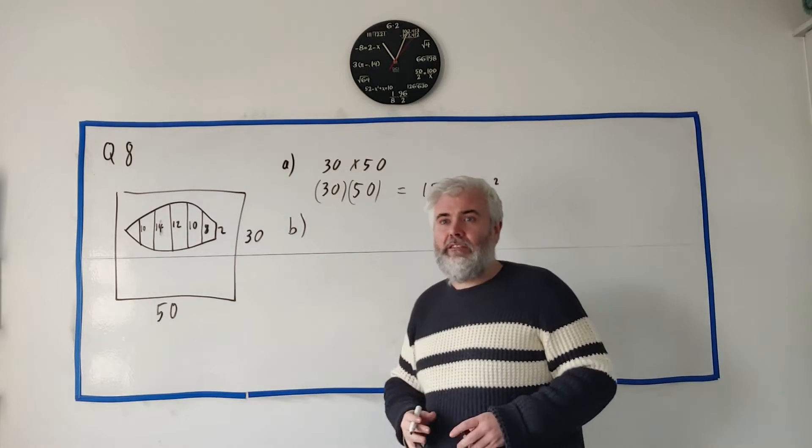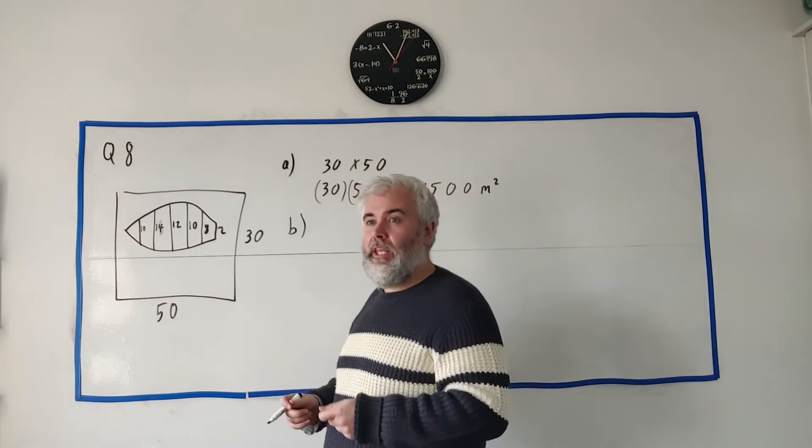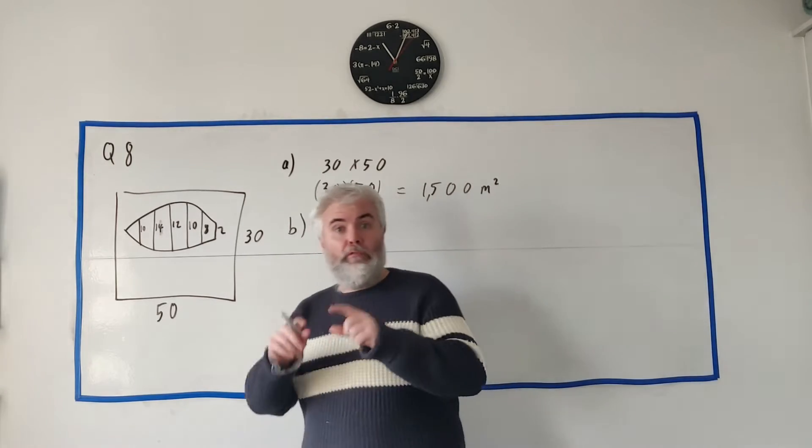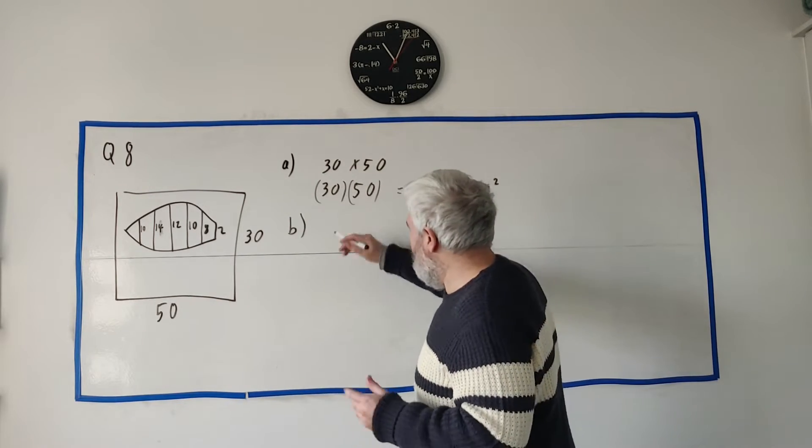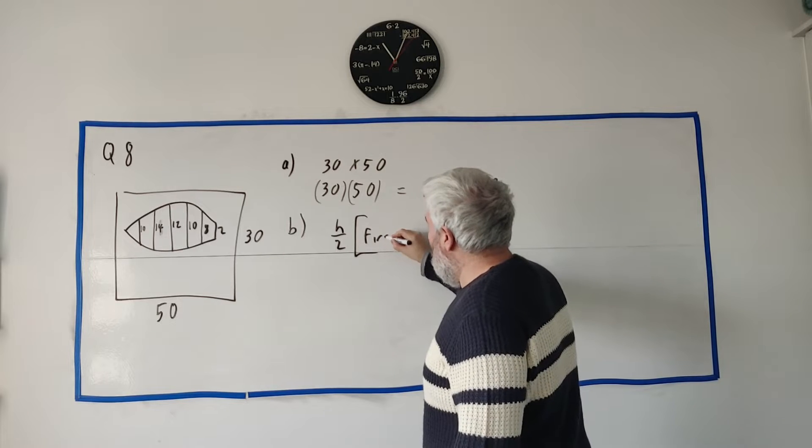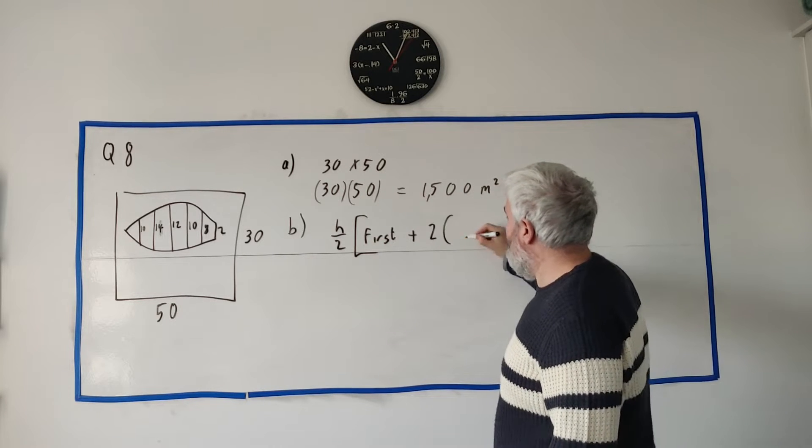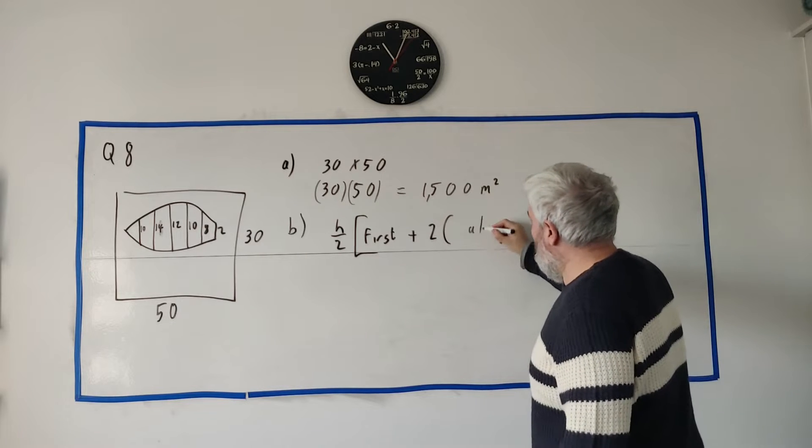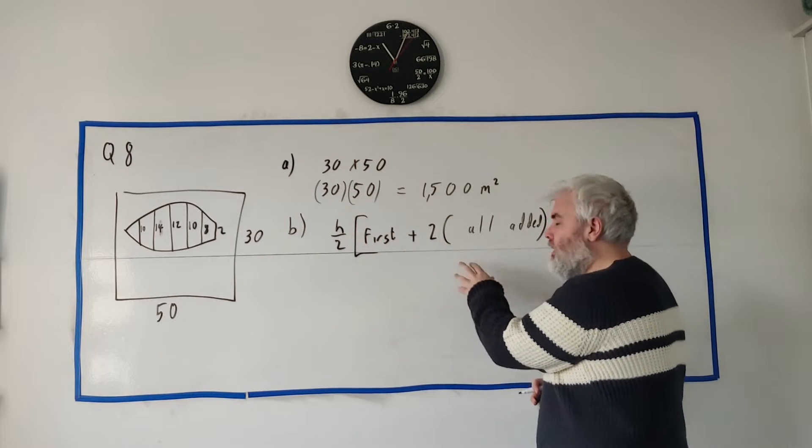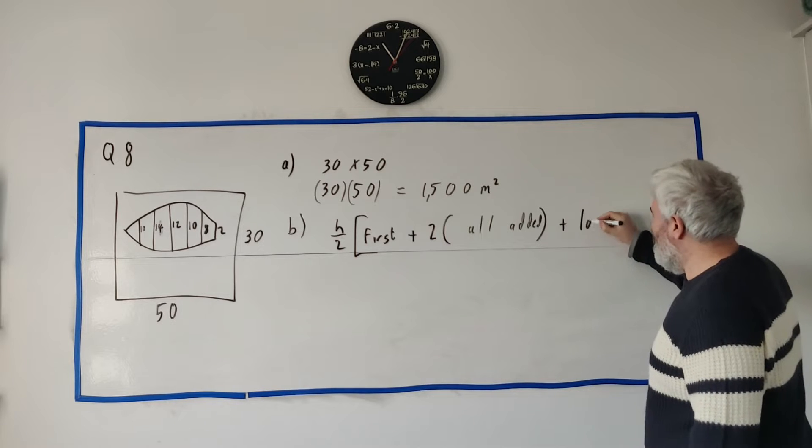For part B, this is the real meat of the question. They ask us to use the trapezoid rule and estimate the area of this pond that's in the middle of the garden. Now the trapezoid rule you'll find it in your formula tables. It's h divided by 2 multiplied by the first number plus 2 times all the other numbers added, plus the last number.